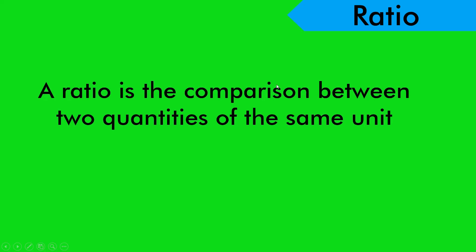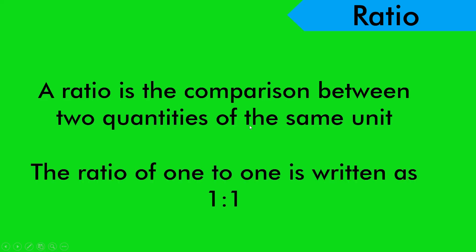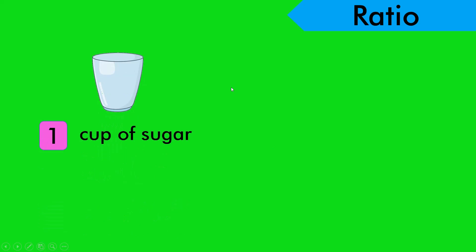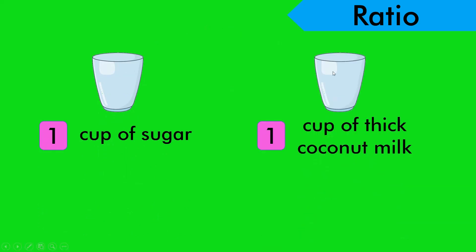Now we go into ratio. Jadi tadi kita dah tahu ratio ni adalah nisbah. Tapi apa itu nisbah? Ratio is the comparison between two quantities of the same unit. Jadi nisbah ni bermaksud perbandingan antara dua quantity dalam unit yang sama. For example, the ratio of 1 to 1 is written as 1:1. This is the example about ratio ataupun nisbah.